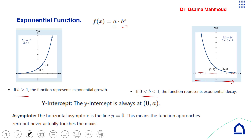We have a horizontal asymptote which is the x-axis, with equation y = 0. This applies in both cases — whether b is greater than 1 (exponential growth) or b is between 0 and 1 (exponential decay). Both have y-intercept at (0, a).